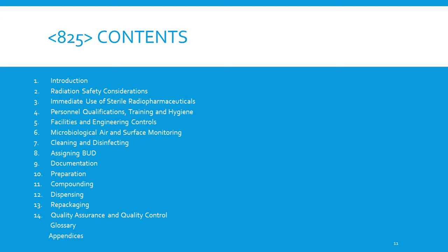The 825 contents include: radiation safety considerations, immediate use for sterile radiopharmaceuticals, personnel qualifications, training and hygiene, facilities and engineering controls, microbial air and surface monitoring, cleaning and disinfecting, assigning beyond use dates, documentation, preparation, compounding, dispensing, repackaging, and quality assurance and quality control.